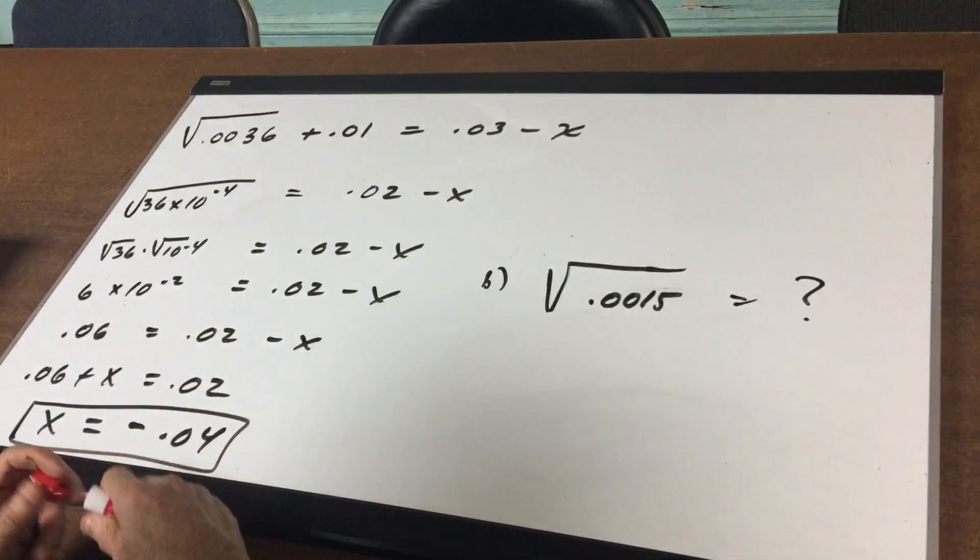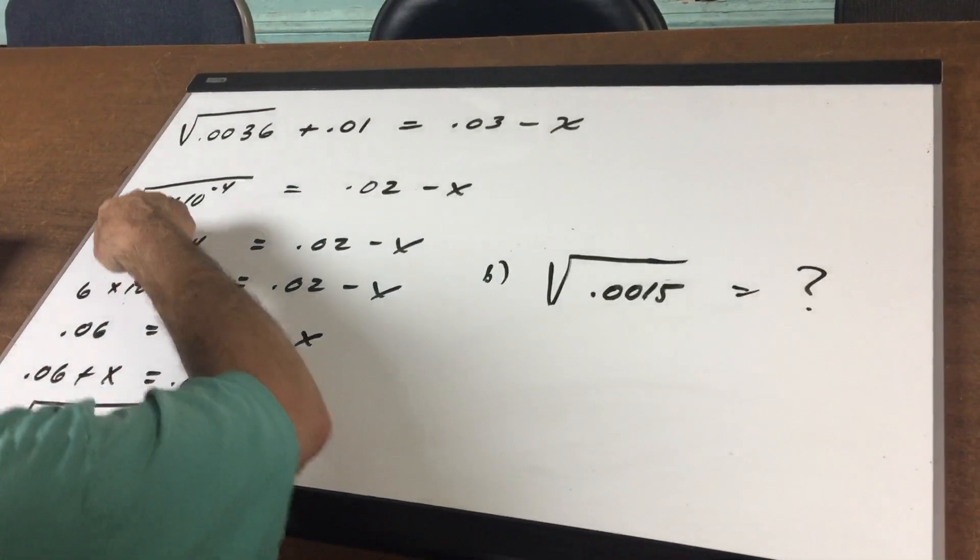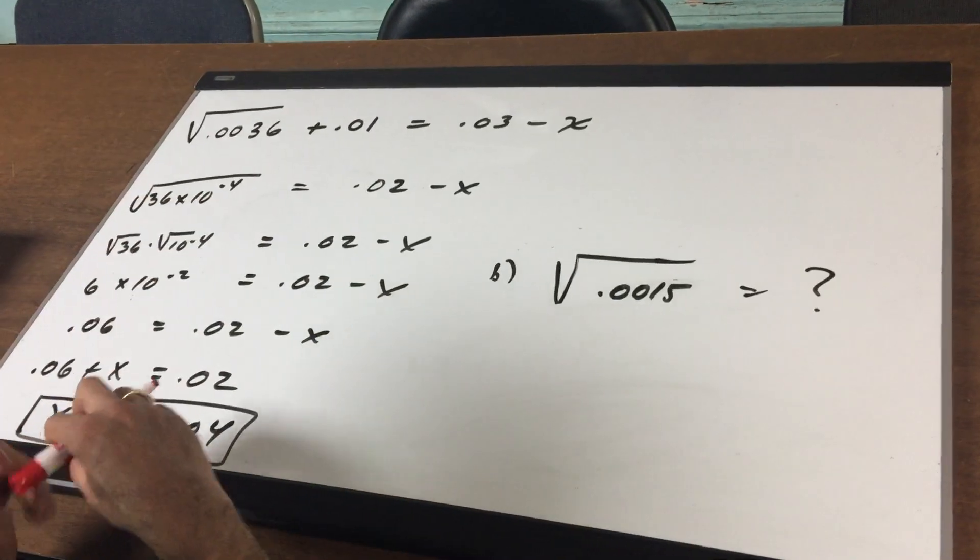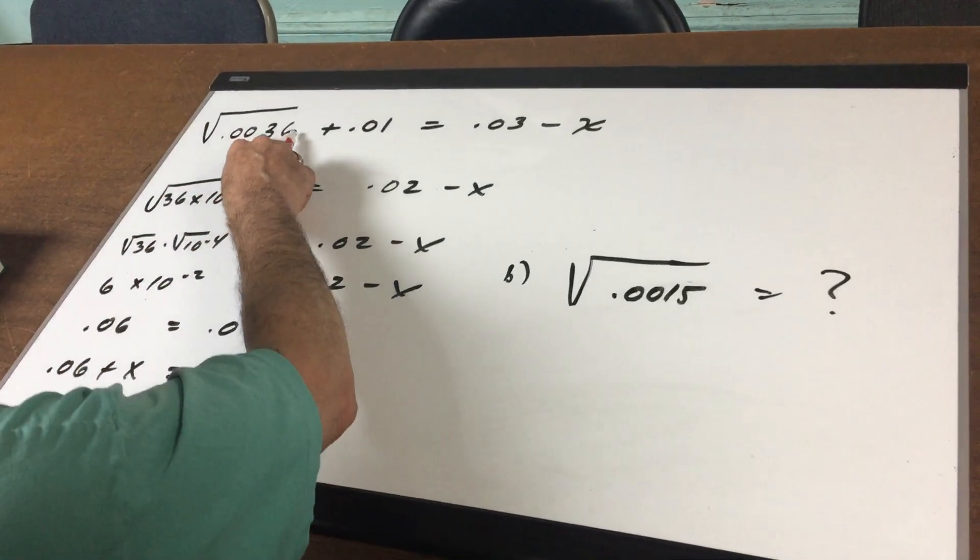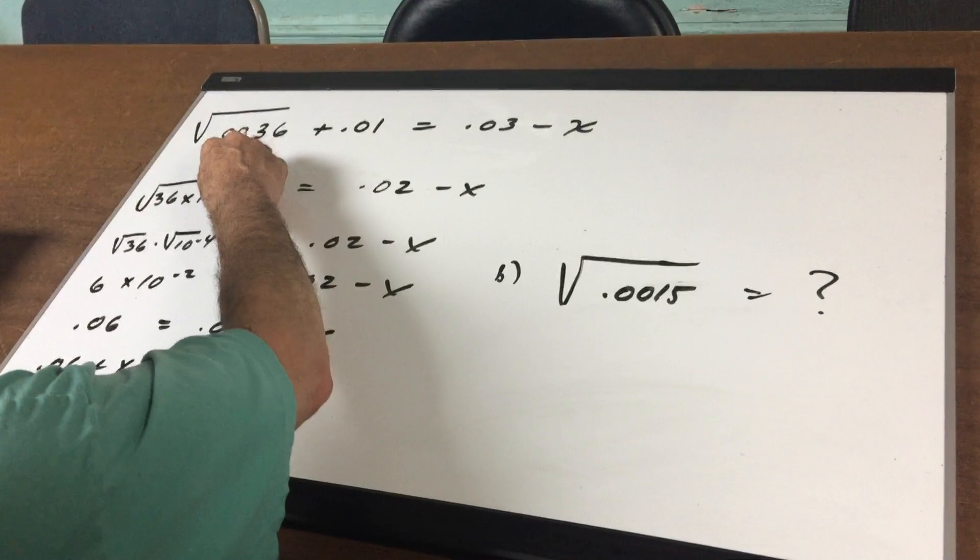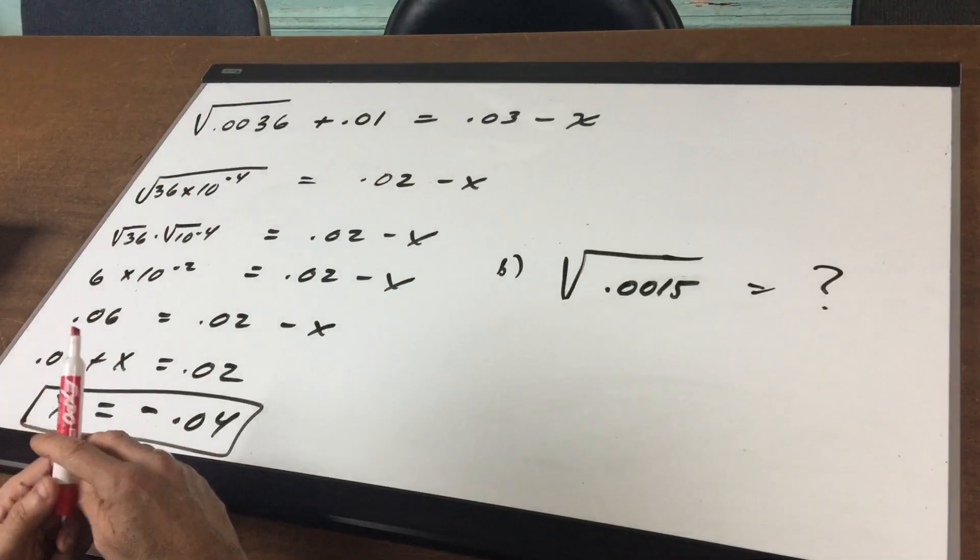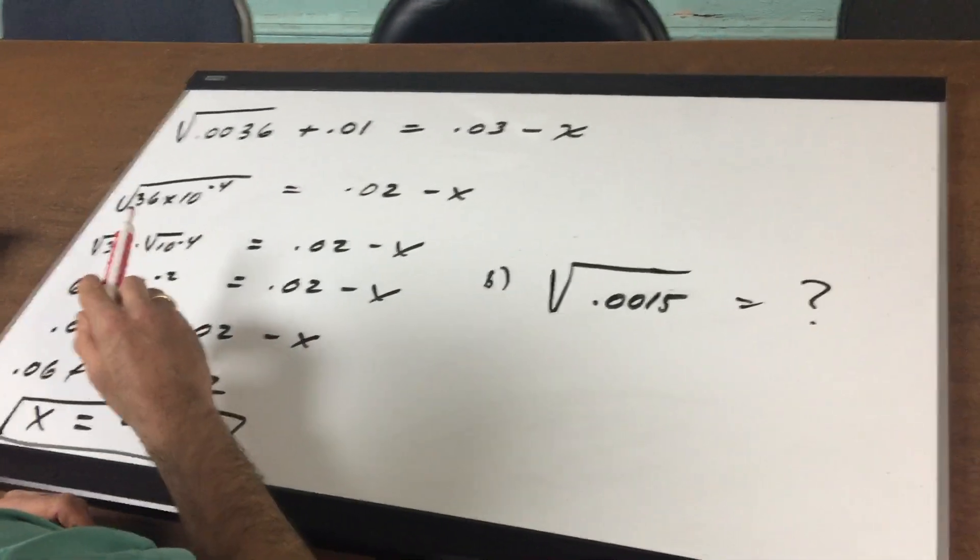Hopefully you can see if you move the decimal 1, 2, 3, 4, it will give you the same number. Now my next move is, after I did this, I subtracted 0.01 from both sides.